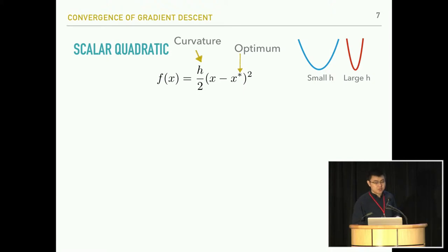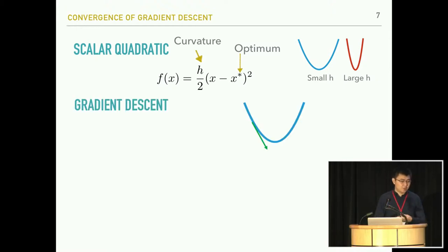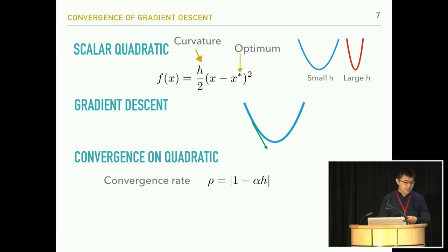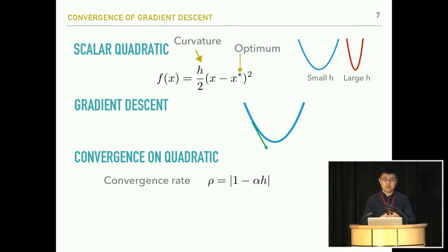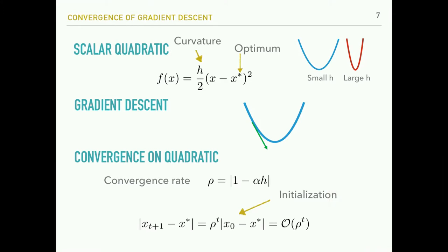Let's first look at a one-dimensional quadratic function. It is defined by the curvature h and the optimum point x star. The curvature h determines the width of the quadratic function. We apply standard gradient descent on top of the quadratic function, where we take steps towards the negative gradient direction. The convergence speed is determined by a quantity called the convergence rate, which is strongly determined by the learning rate alpha and the curvature h.